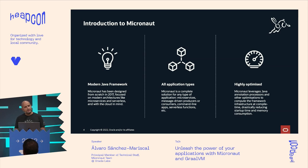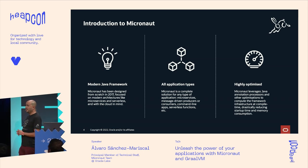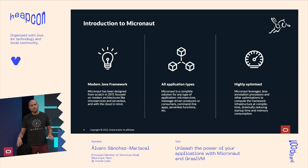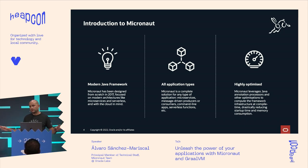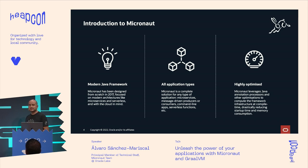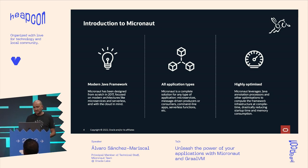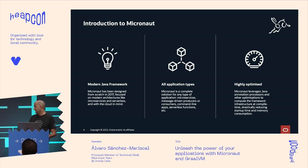The second thing is that Micronaut is a general-purpose application framework. You can use it to write any kind of application — REST microservices, command line applications, message-driven systems with no server at all, like a Kafka consumer or producer, or serverless functions running in the cloud.